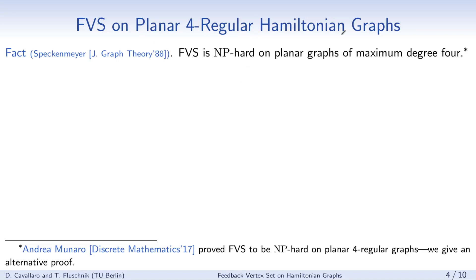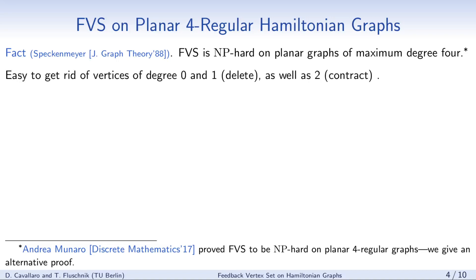We recently learned that Andrea Munaro also proved that feedback vertex set is NP-hard on planar 4-regular graphs, which is our first step, so we give here an alternative proof. If we have a planar graph of maximum degree 4, it is easy to get rid of vertices of degrees 0 and 1, which we can simply delete, or of degree 2, which we can simply contract.